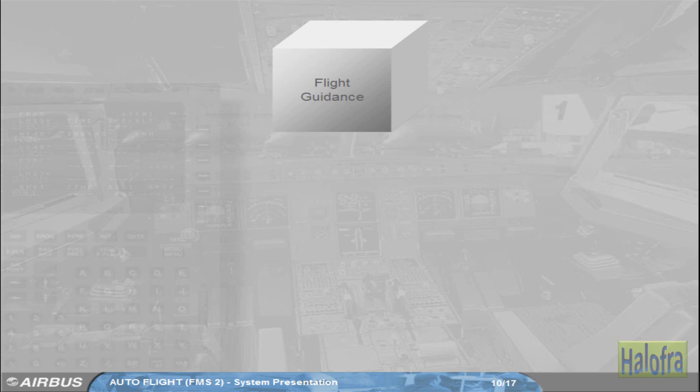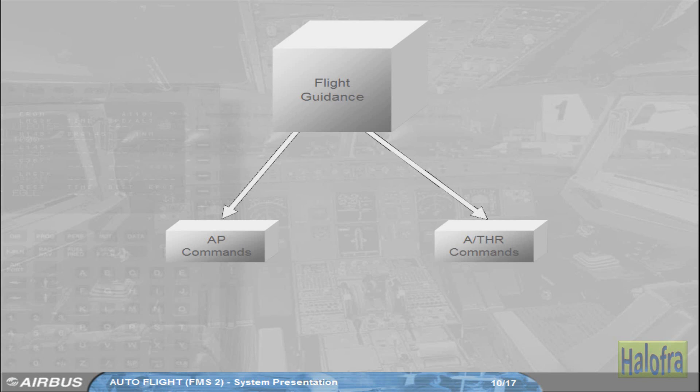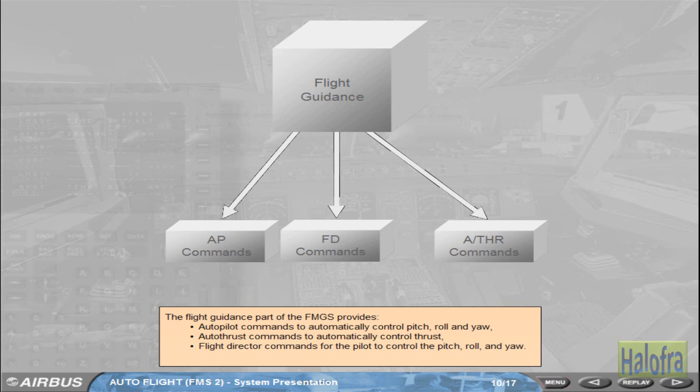The flight guidance part of the FMGS provides autopilot commands to automatically control pitch, roll, and yaw. It also provides autothrust commands to automatically control thrust, and flight director commands for the pilot to control pitch, roll, and yaw.